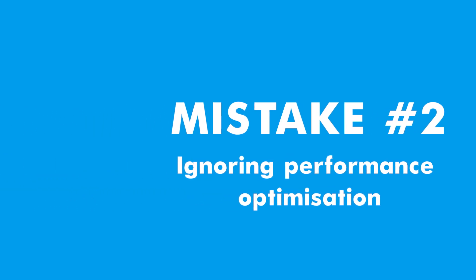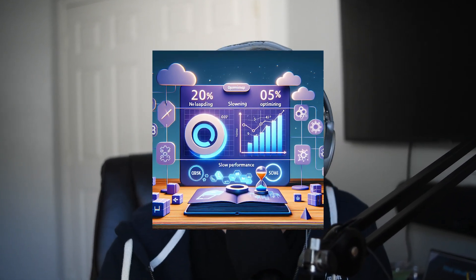Mistake number two: ignoring performance optimizations. Power Apps can slow down if you don't optimize your data sources and formulas. One common pitfall is not using delegation properly. Delegation allows Power Apps to handle large data sets efficiently by delegating the data processing to the data source — such as SharePoint or SQL — though there are other data sources that cannot be delegated.